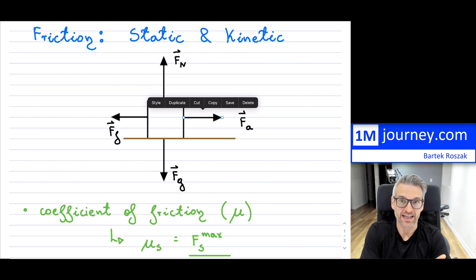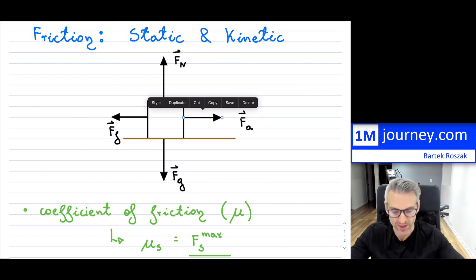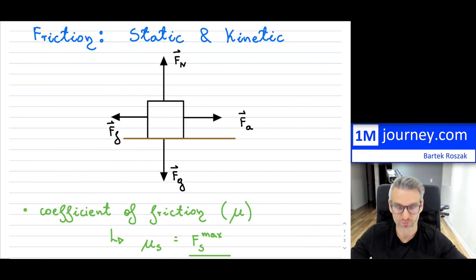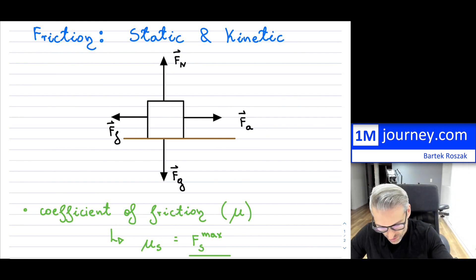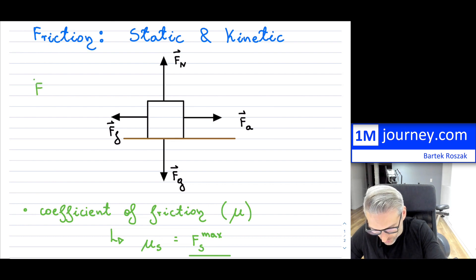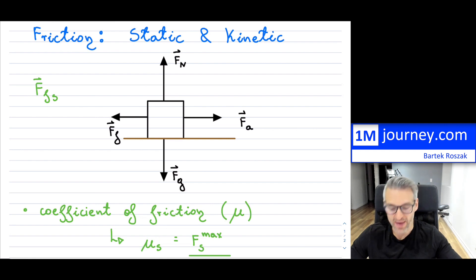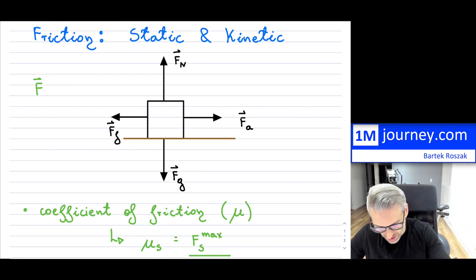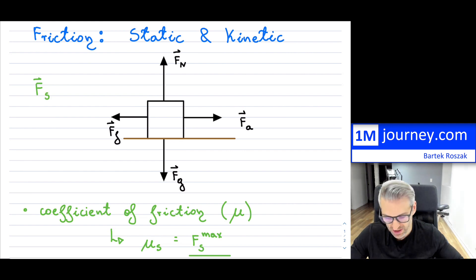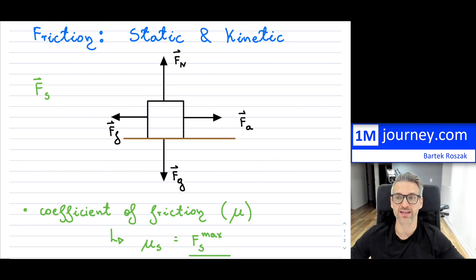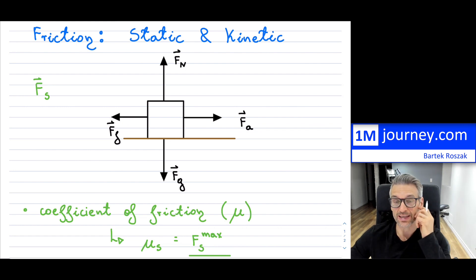This static friction we typically designate as the force of friction with a little S to indicate static. This is just a convention — you might even drop the F and just write a little S for static friction. It is always going to be opposing the applied force, resisting it until it can no longer resist anymore.